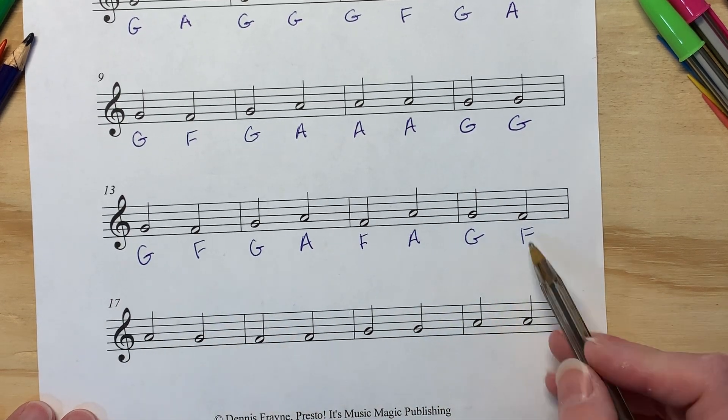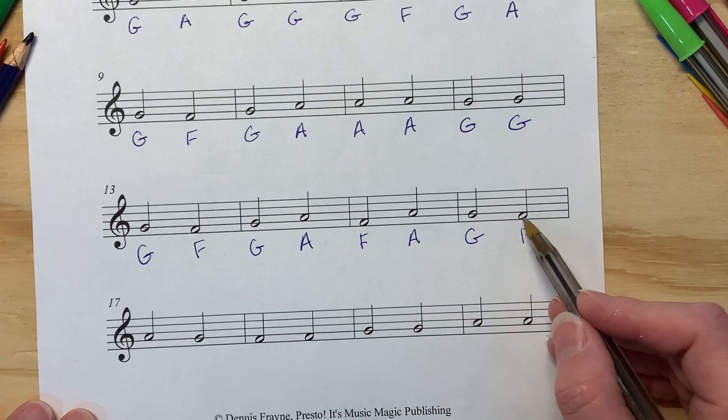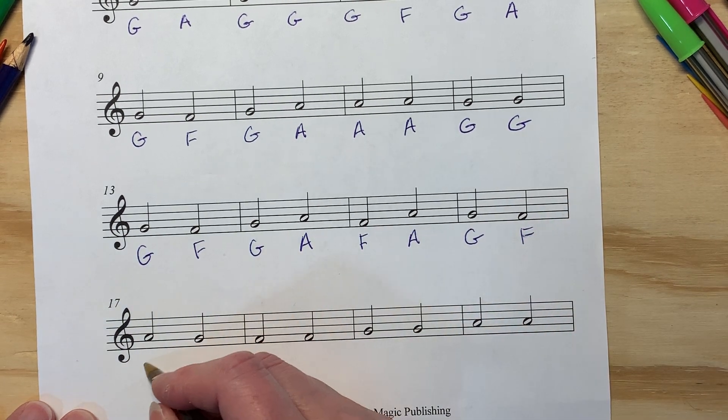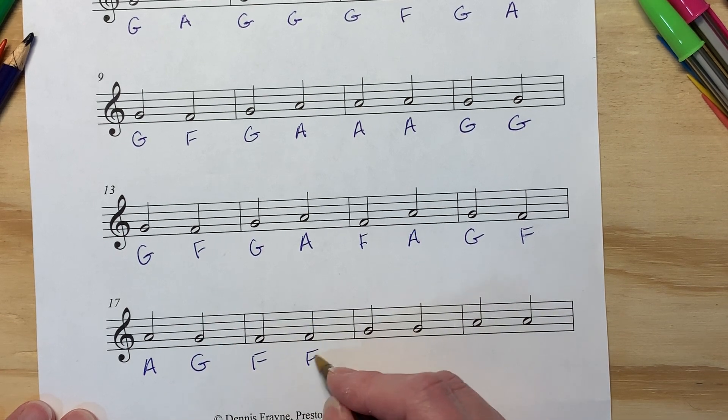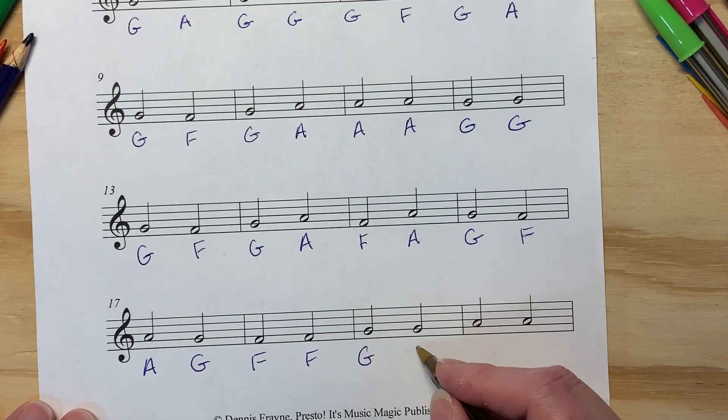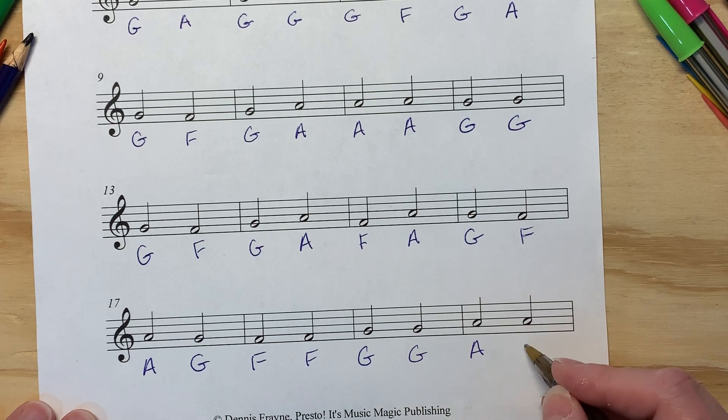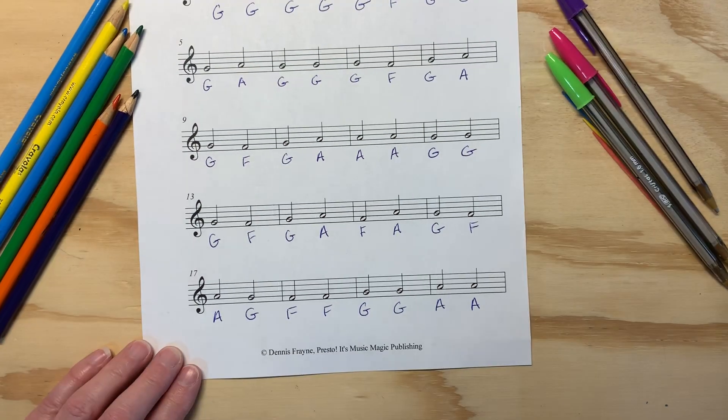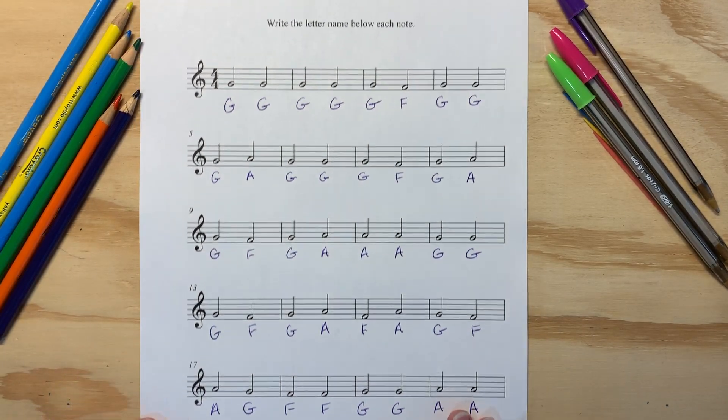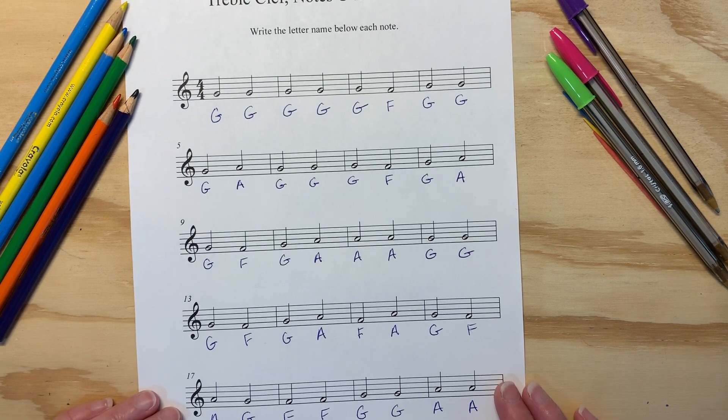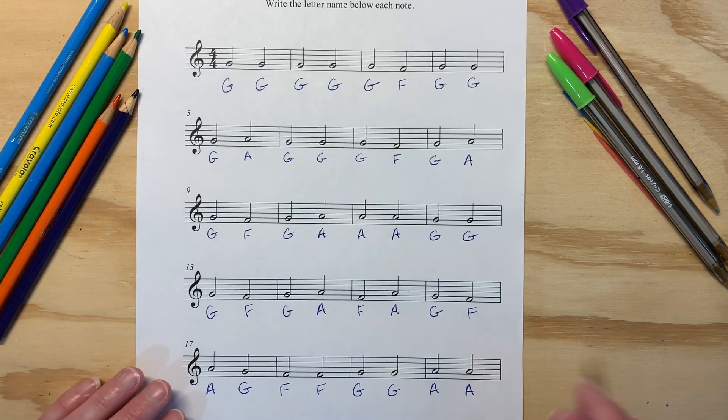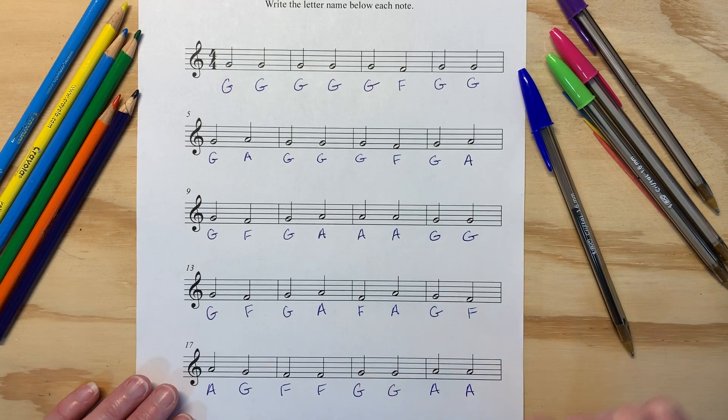And then from F, it skips or jumps up to an A, down to a G, down to an F, repeats that F, up to a G, repeats the G, up to an A, and repeats that A. And here is our page, the notes that are right on the staff, and play some music.